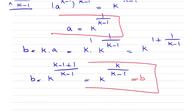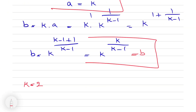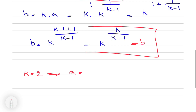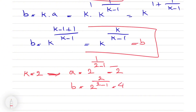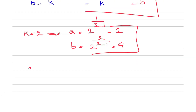Let's go with k equal to 2. Our a will be 2 to the power of 1 over 2 minus 1, which is 2 to the power of 1, or 2. And b will be 2 to the power of 2 over 2 minus 1, which is 4. To verify: a to the b equals b to the a gives us 2 to the 4 equals 4 to the 2, and each of them equals 16. So this one works.